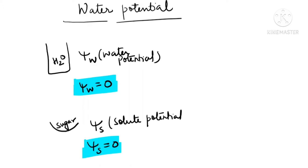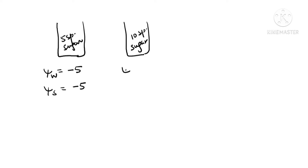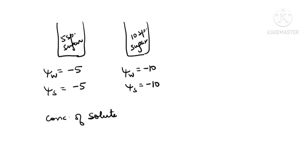Now see what happens when we make a solution. Here is one glass of water in which I have added five spoons of sugar. As a result, the water potential value decreases to minus five. Minus means since maximum is zero, the decrease goes toward minus. Same way solute potential is also minus five. In the second beaker, suppose I am adding ten spoons of sugar — so water potential is minus ten and solute potential is also minus ten. When we increase the concentration of solute, water potential or solute potential both decrease.